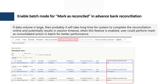The second feature is Enable Batch Mode for Mark as Reconciled in Advanced Bank Reconciliation. When the data volume is large it can take a long time to complete the reconciliation process in online mode, potentially resulting in a session timeout. When this feature is enabled the user can perform the Mark as Reconciled action in batch mode for better performance.